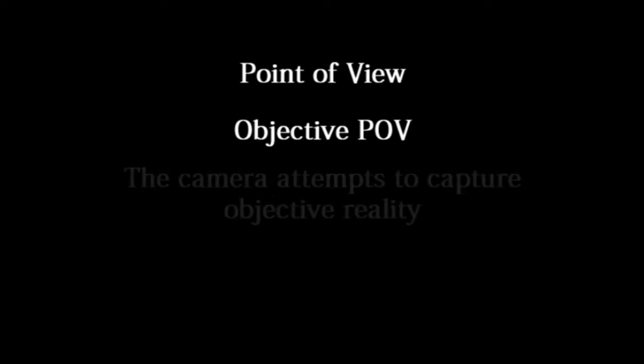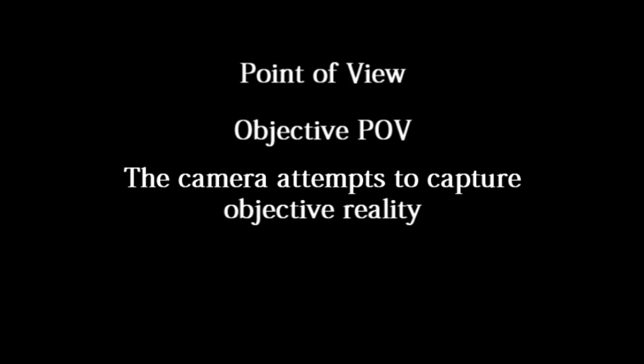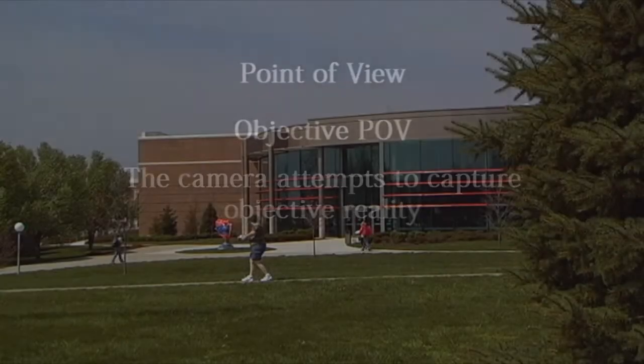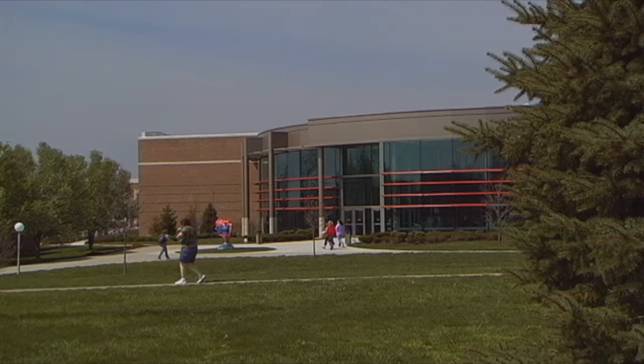When a filmmaker is trying to decide where to put the camera, they must first determine whether they want to create an objective point of view or a subjective point of view. An objective point of view is created when the camera is placed in such a position as to create a sense that the viewer is outside or apart from the action. The further the camera is from the subject, the more objective the point of view.